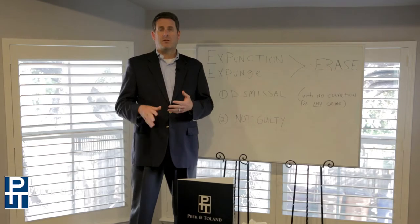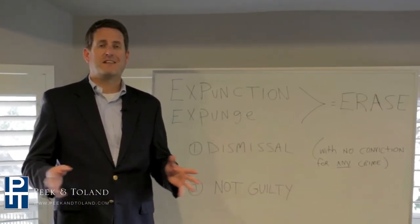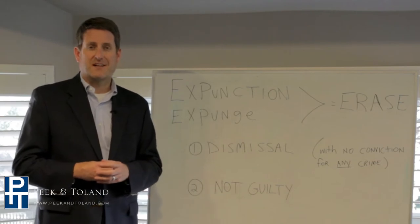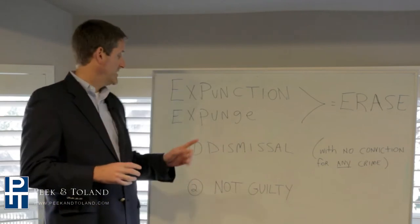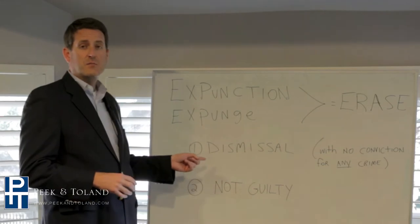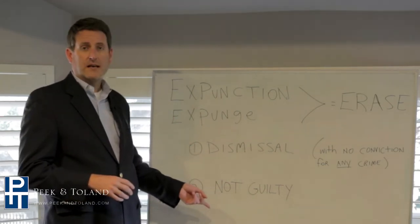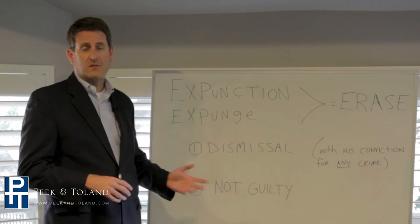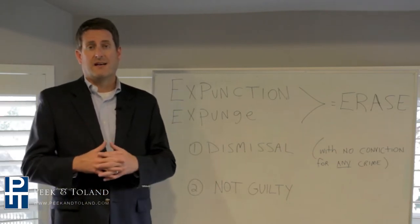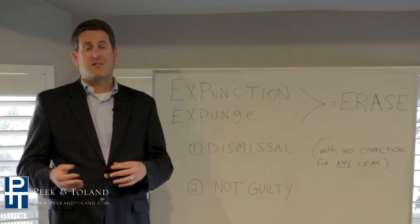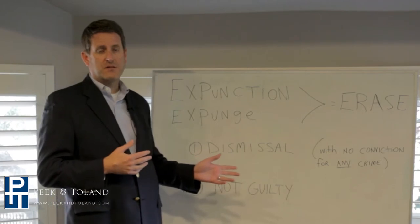We're going to talk about who's eligible and what the process is. This is specific to the state of Texas. If you were arrested in another state, check with lawyers in that state because many states handle this very differently. In Texas, you must have either had the case dismissed or been found not guilty at trial. Deferred adjudication, while technically a dismissal at the end of the case, does not qualify for an expunction.